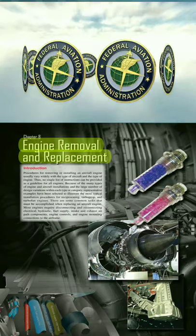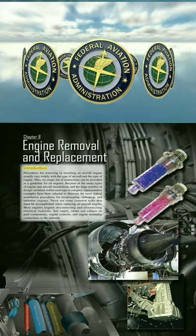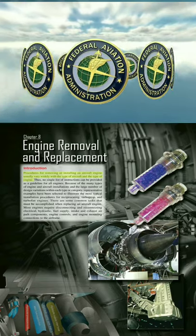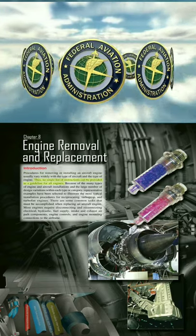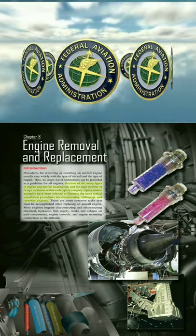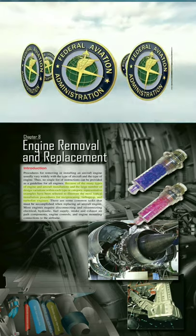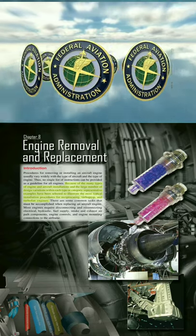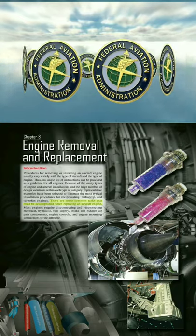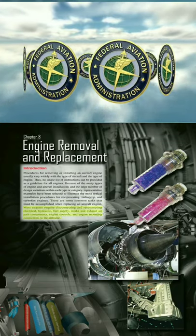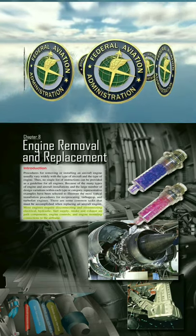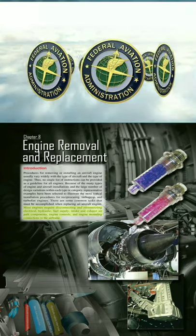Chapter eight: Engine Removal and Replacement. Introduction: Procedures for removing or installing an aircraft engine usually vary widely with the type of aircraft and the type of engine. Thus no single list of instructions can be provided as a guideline for all engines. Because of the many types of engine and aircraft installations and design variations, representative examples have been selected to illustrate typical installation procedures for reciprocating, turboprop, and turbofan engines. Common tasks include disconnecting and reconnecting electrical, hydraulic, fuel supply, intake, exhaust, engine controls, and engine mounting connections.